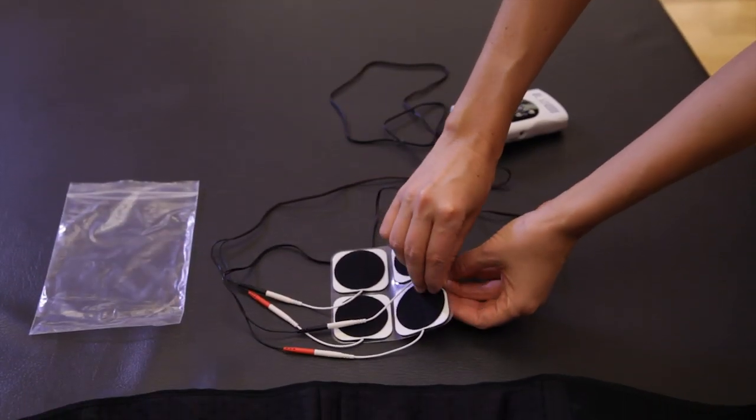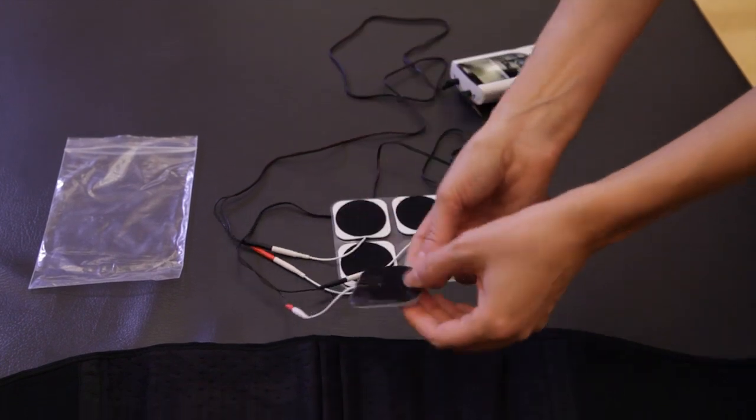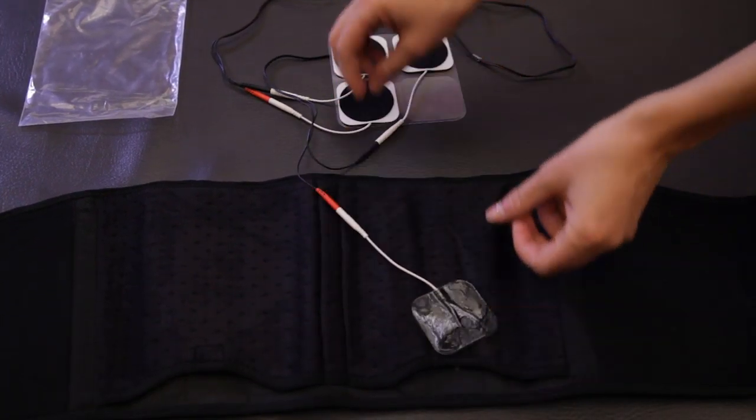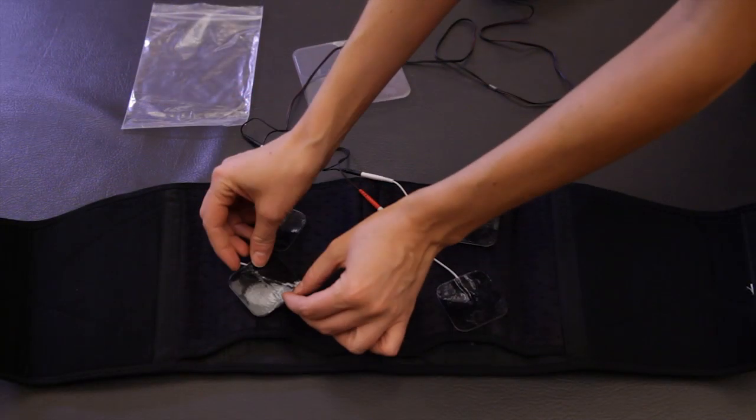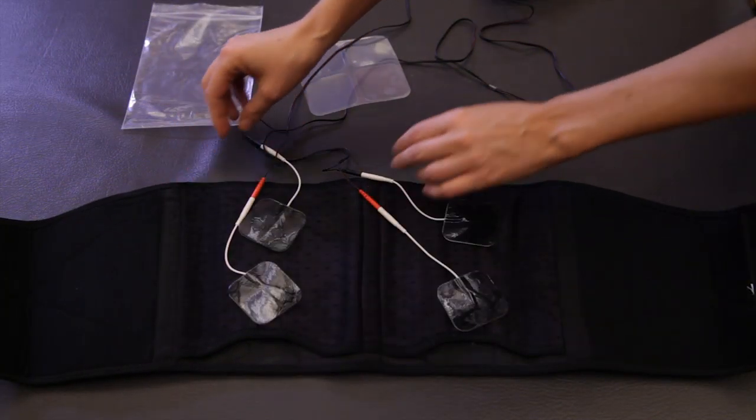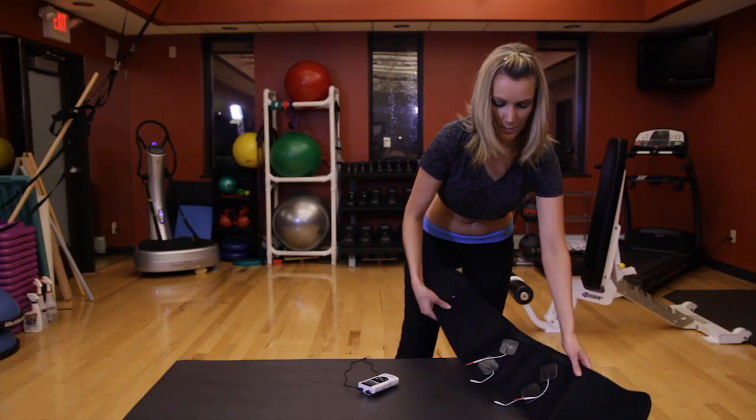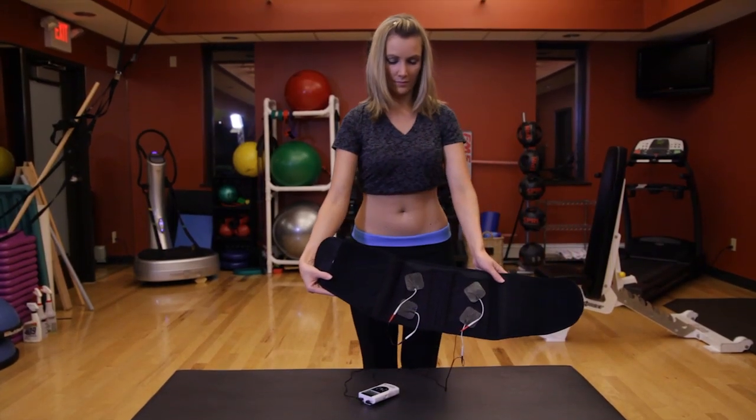Place the Velcro side of the electrode onto the garment with the sticky side of the electrode facing up. Position the back garment around the waist with enough tension to assure a proper fit.